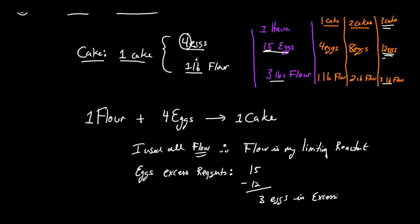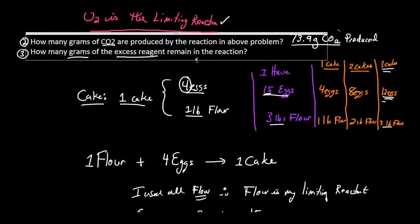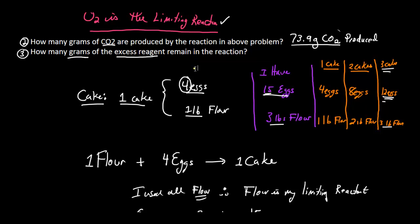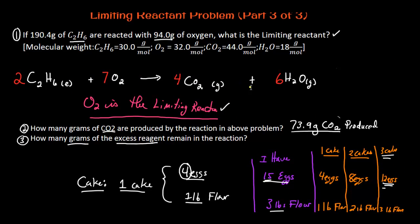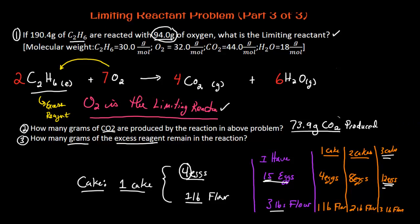Use this analogy to understand the last chemistry question. In chemistry, we always start with the mass of the limiting reactant — 94.0 grams of oxygen. We know C2H6 is the excess reagent with extra leftover. We need to determine how much C2H6 is actually used in the reaction.